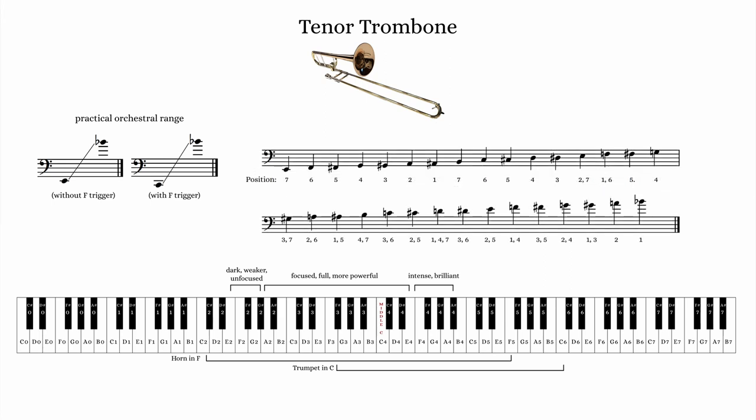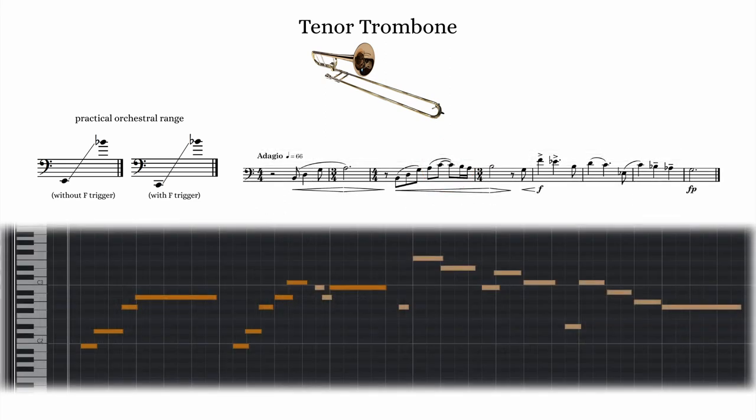Here are the notes within the tenor trombone range, showing which notes are possible in more than one position. Moving quickly between a particular A-sharp and B-natural, for instance, would be quite a challenge. The next timbral register includes notes within the bass clef staff all the way up to the E or F above middle C. This is where the majority of tenor trombone music will be written, and the timbre is more focused, full, and powerful. The instrument is capable of more agile passages in this range, especially notes above the bass clef staff, and the trombone can be very effective as a melodic instrument here.